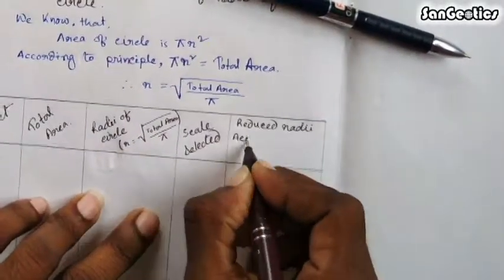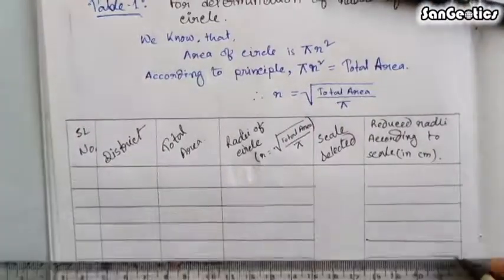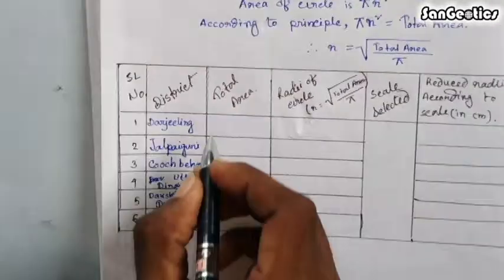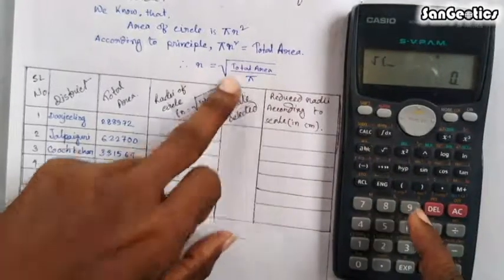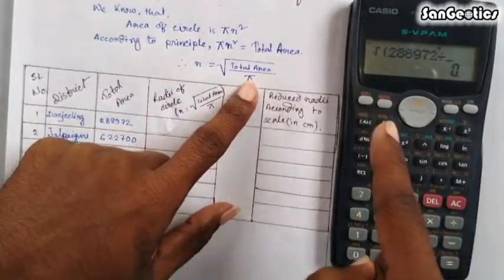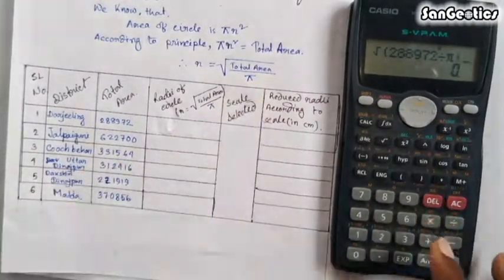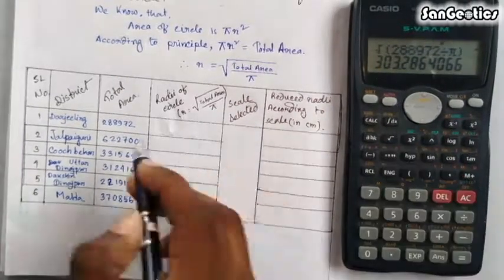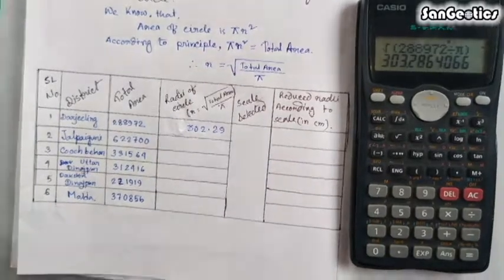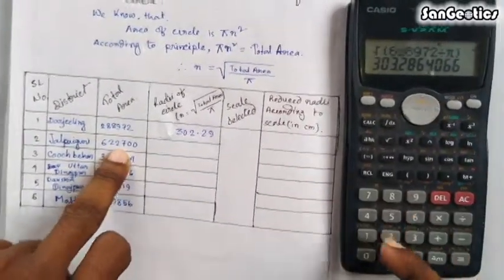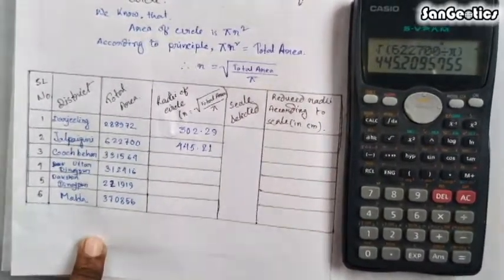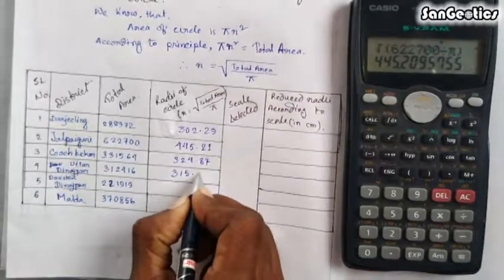Then draw a row and copy the district and total area from your data table. Calculate the radius of the circle according to the formula r = √(total area / π). For example, √(288797 / π) = 303.29; similarly, √(622700 / π) = 445.21. Similarly, calculate the radius of the circle for the remaining districts.